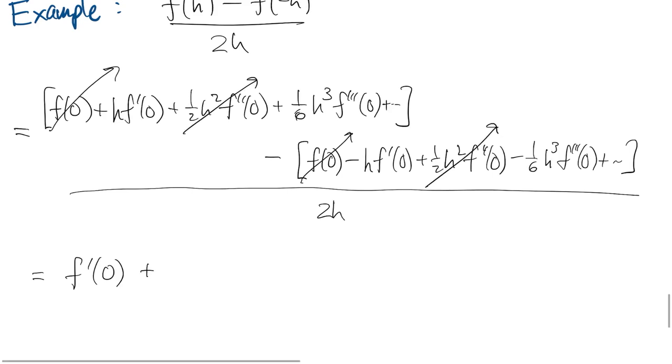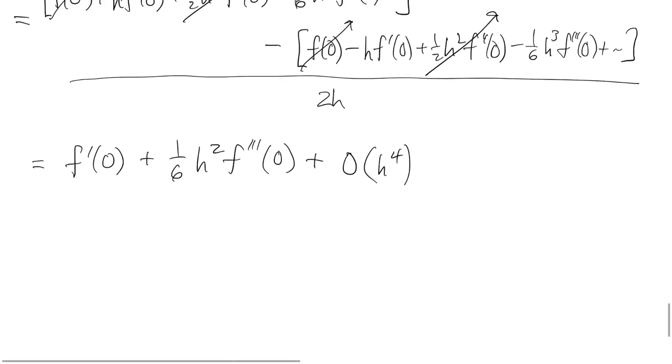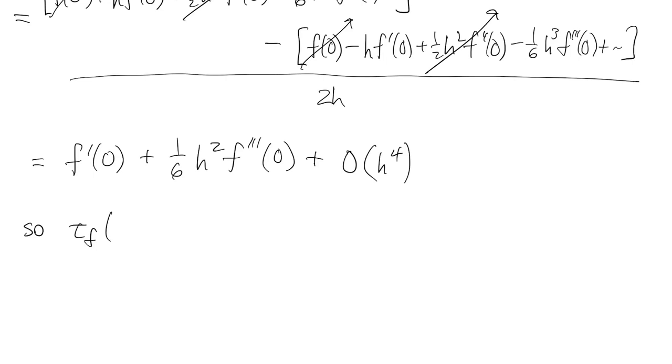The next term gives us one-sixth h squared f triple prime of zero, and so on. Hence the truncation error starts out with an h squared term. So we say the order of accuracy is two.